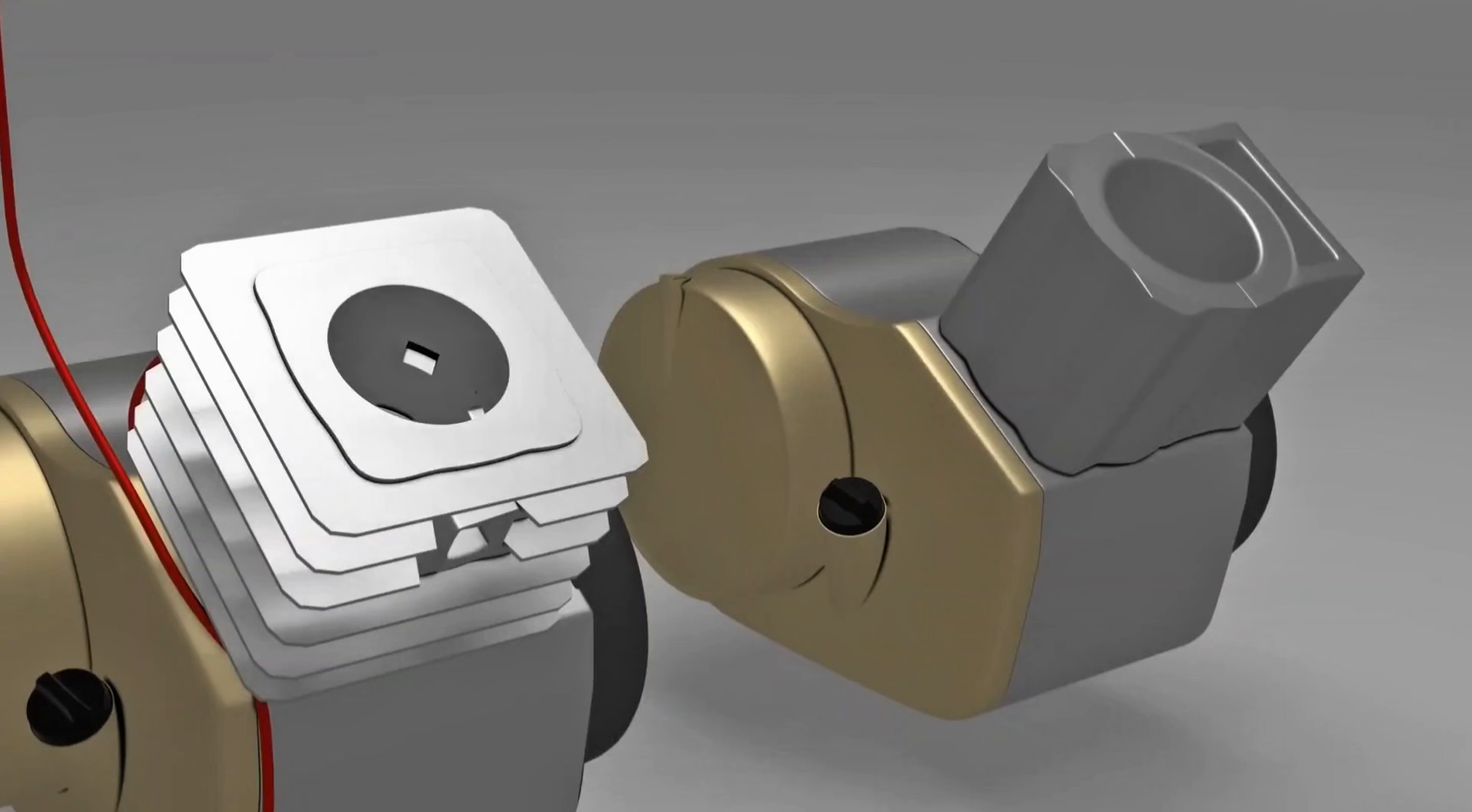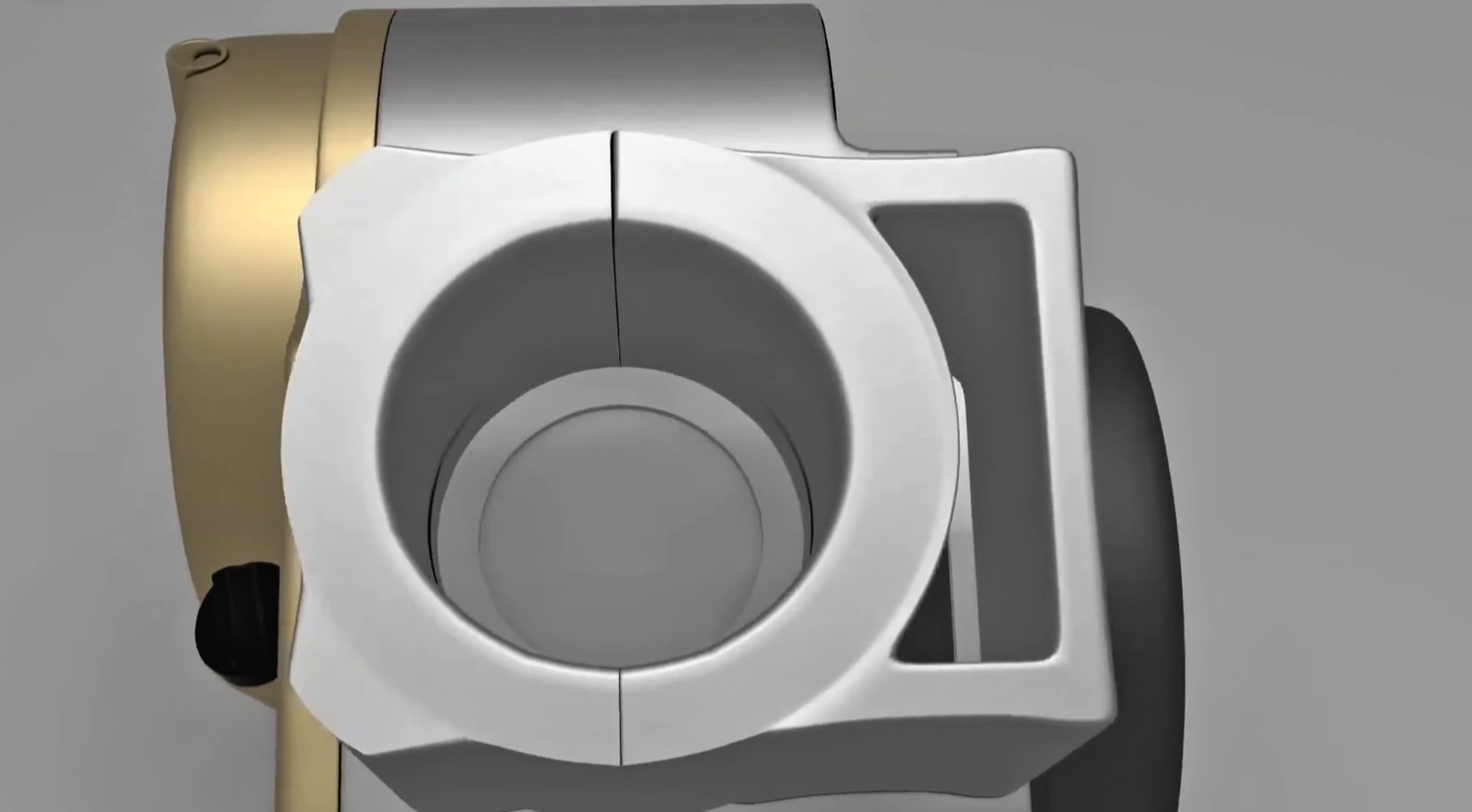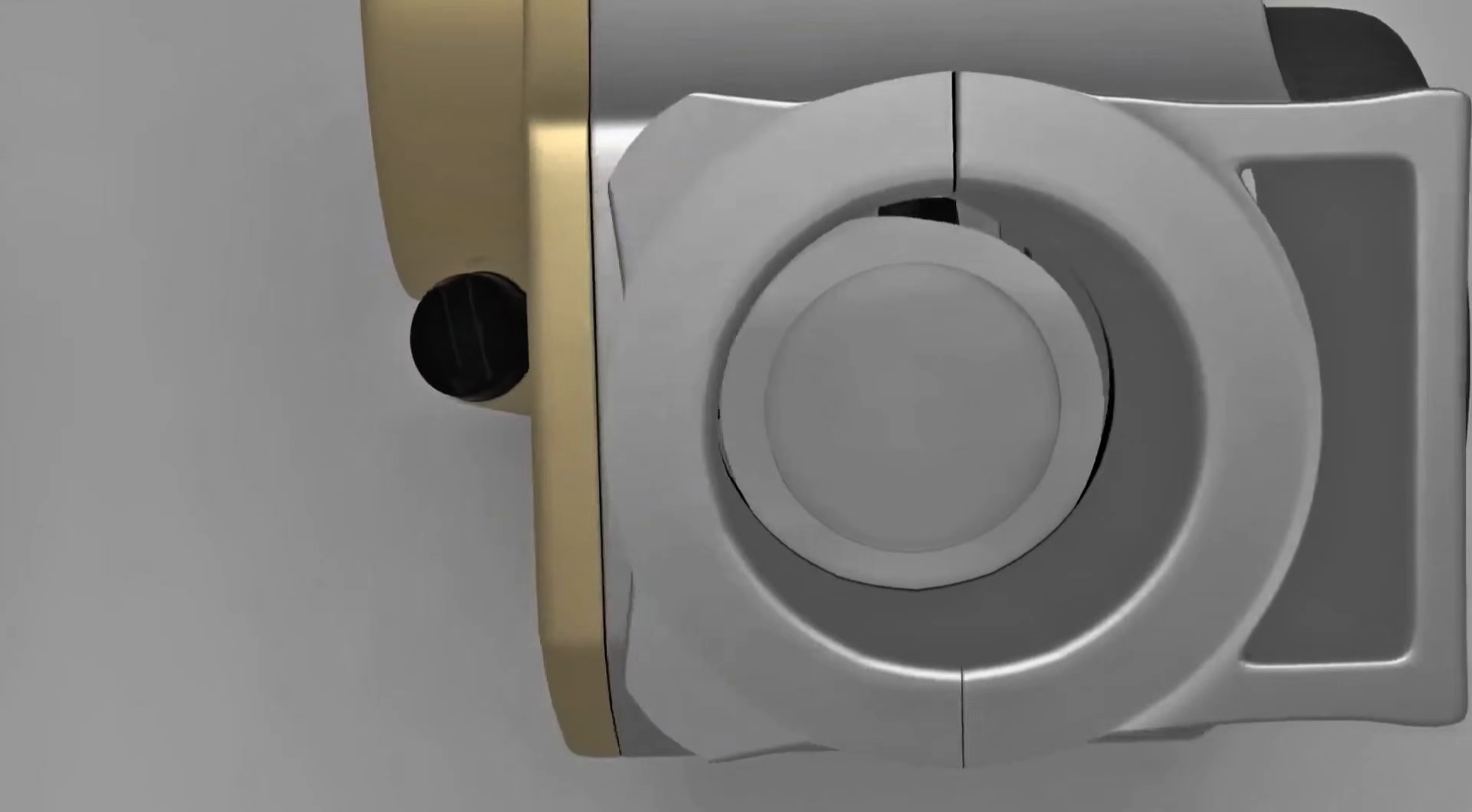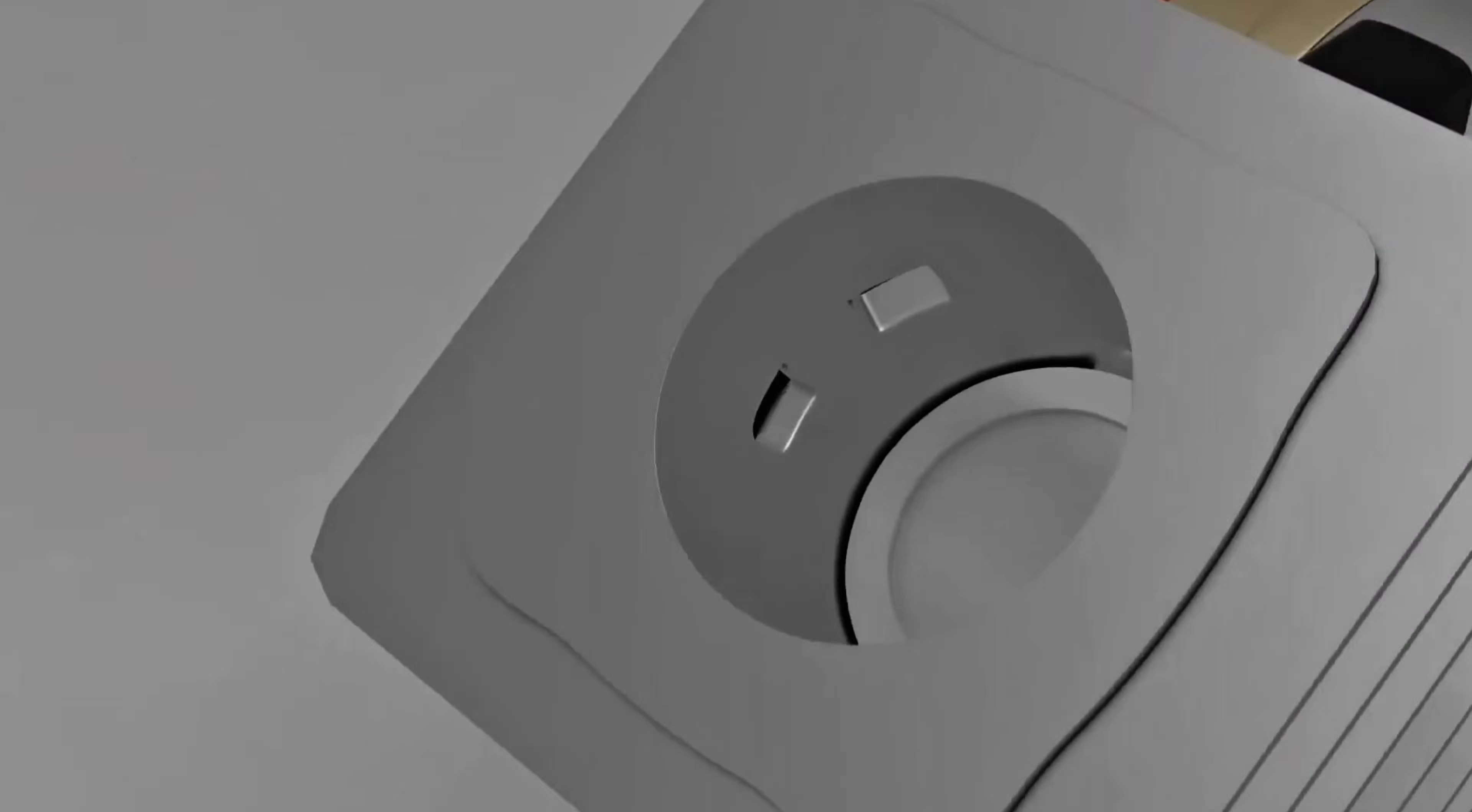The cylinder blocks of two-stroke and four-stroke engines are very different. As you can see, the cylinder block of a four-stroke engine is smooth and flat, without any extra passages. Meanwhile, a two-stroke engine has many openings.